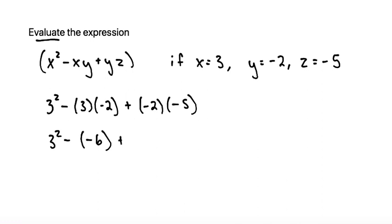And then plus, we have negative 2 times negative 5. A negative times a negative is a positive. 2 times 5 is 10, so I'll just leave it as plus 10. And I can drop the parentheses on that one since the negative goes away.